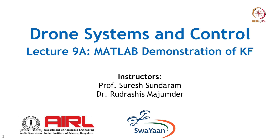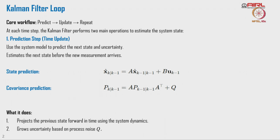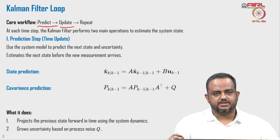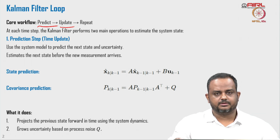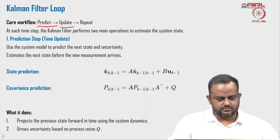We have gone through the Kalman filtering lectures and seen that the actual algorithm of Kalman filter consists of two important steps: one is prediction and another is correction or updation. This particular step keeps on going with a number of iterations, and we get the predicted values and estimated values.